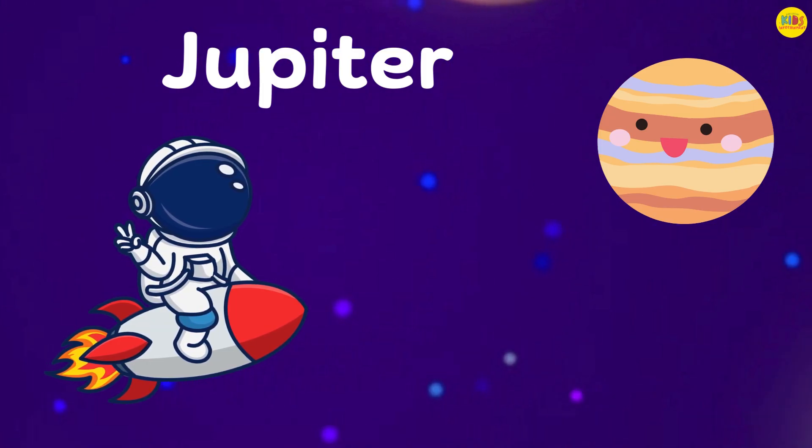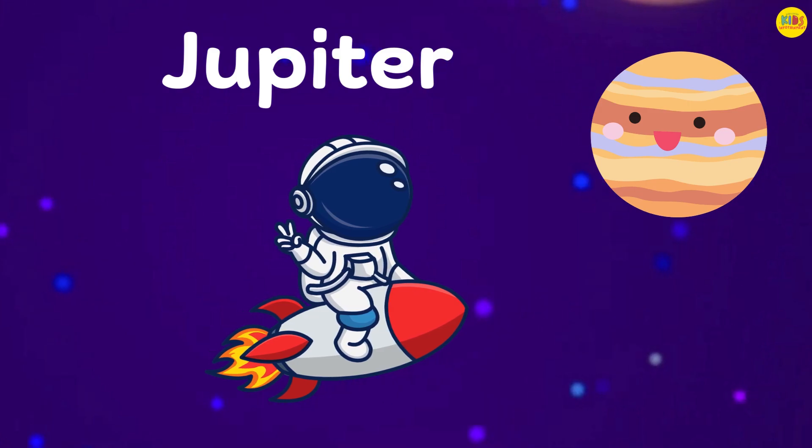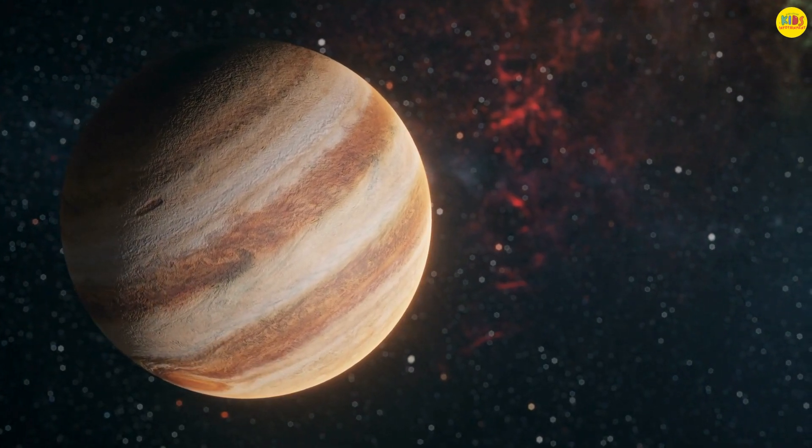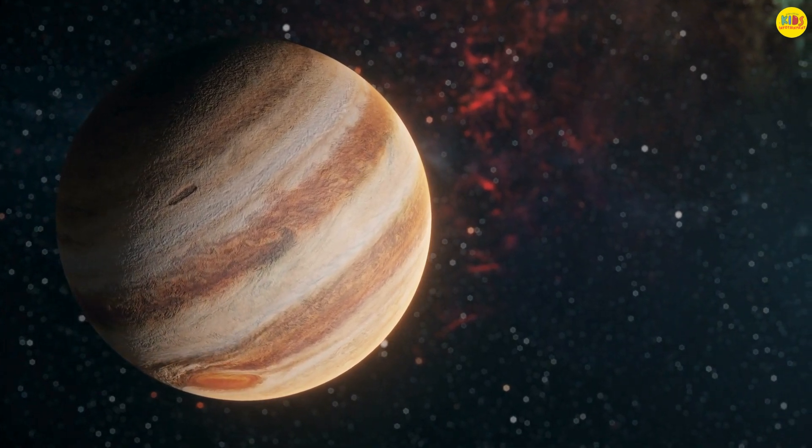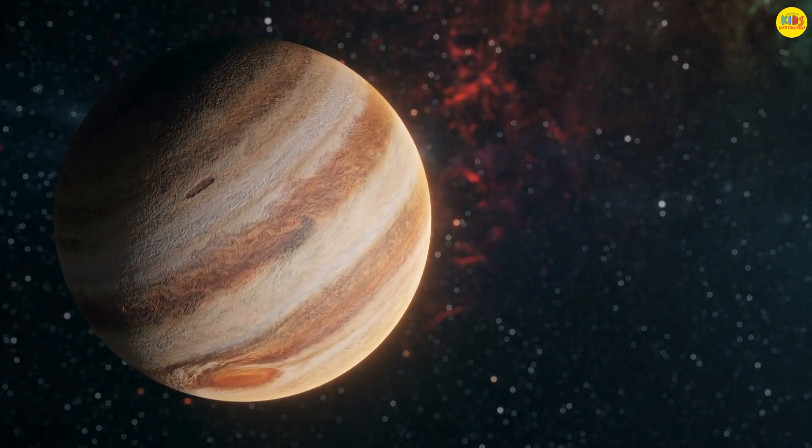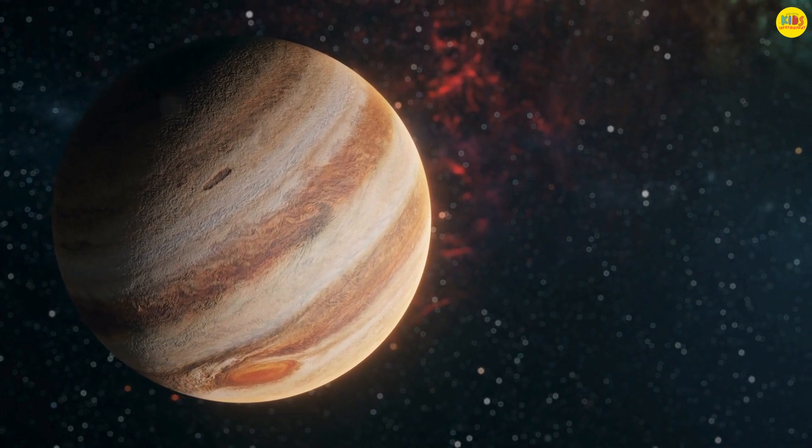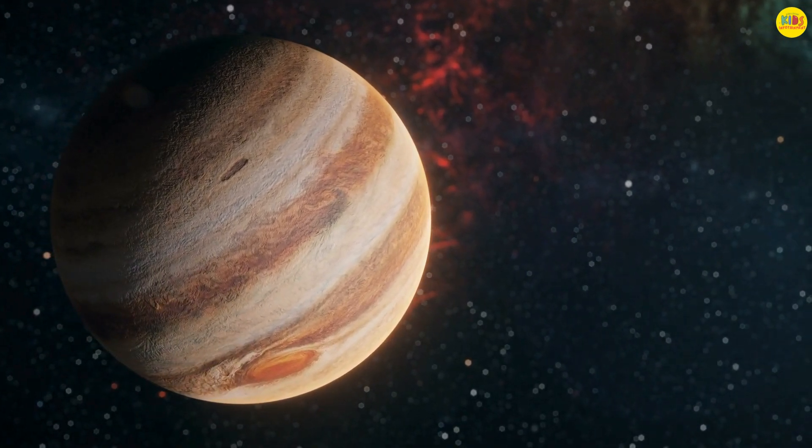Wow, look at that giant. This is Jupiter, the biggest planet in our solar system. It's so big that all the other planets could fit inside it. Jupiter has a huge storm called the Great Red Spot that's been raging for hundreds of years.